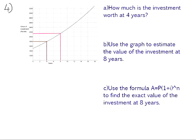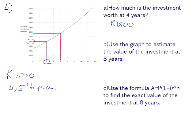In question 4, you were given a graph showing the value of an investment of 1,500 rand over a period of time growing at 4.5% per annum. Number A, how much is the investment worth at 4 years? So you read 4 off of the horizontal axis, read up to the graph and across, and it is worth 1,800 rand at 4 years.